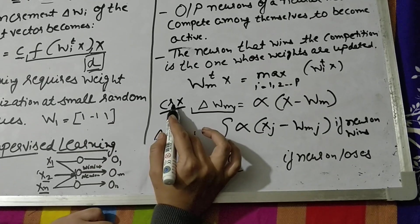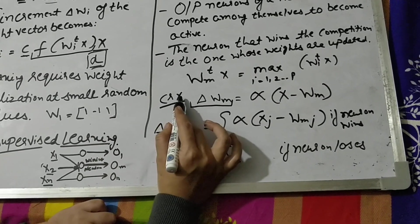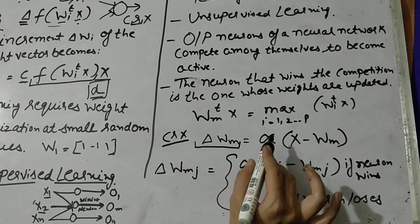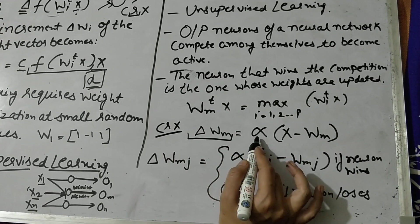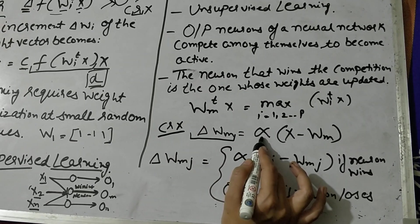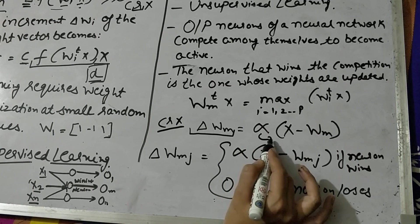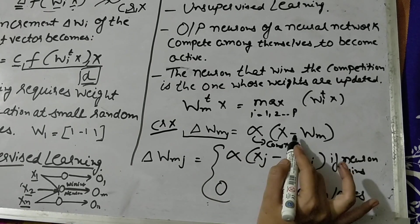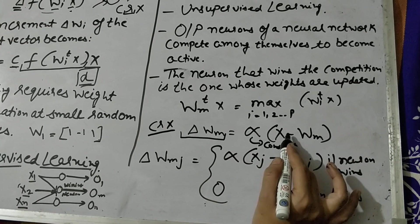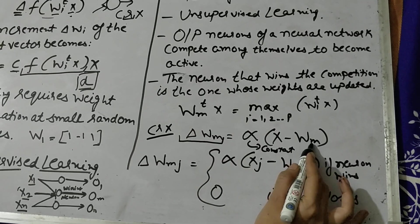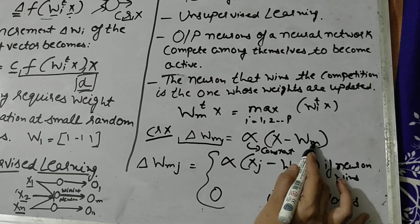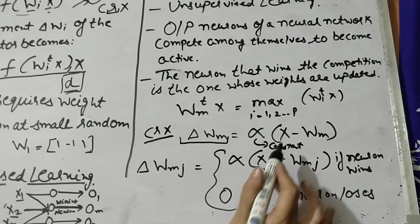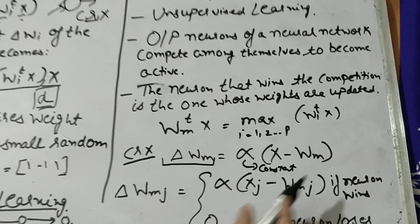In the Winners-Take-All rule, the learning signal r is equivalent to alpha, which is a constant. The weight update formula involves alpha, the input values x, and wm — the maximum weighting of the winning neuron.